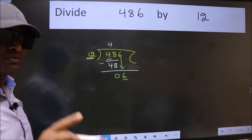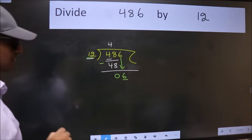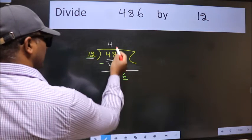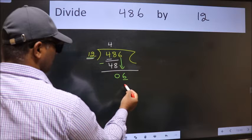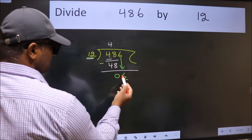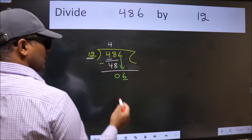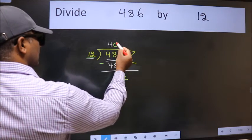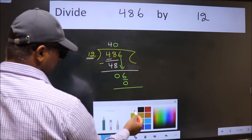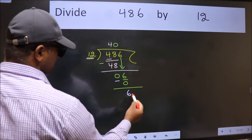Instead of that, what we should think of doing is which number should we take here. If I take 1 we will get 12, but 12 is larger than 6. So what we do is we take 0 here. So 12 into 0 is 0. Now we subtract, we get 6.